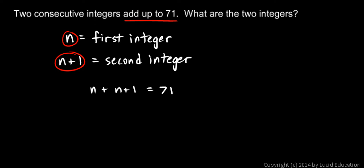Now the problem has been translated into an equation I can solve. n + n + 1, I can combine these two n's and write 2n + 1 = 71. My next step is to subtract 1 from each side. The +1 and -1 cancel out, so I have 2n on the left, and on the right I have 71 - 1, which is 70.